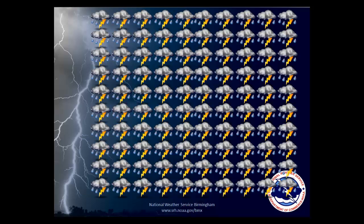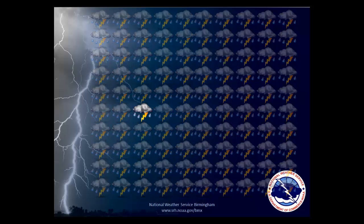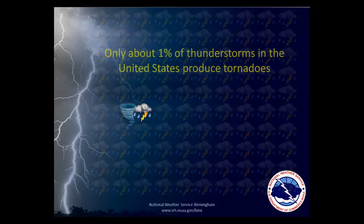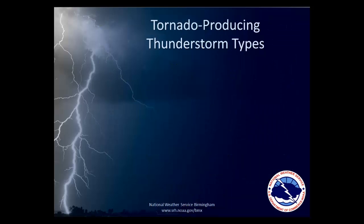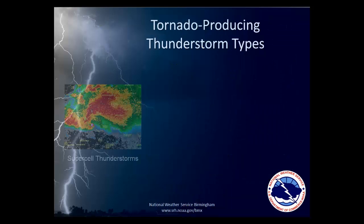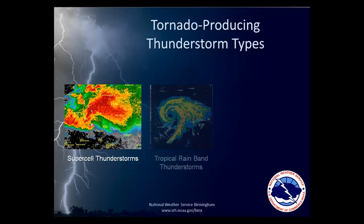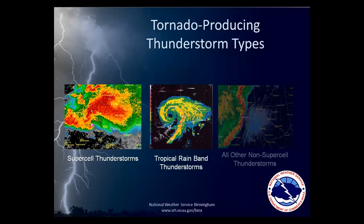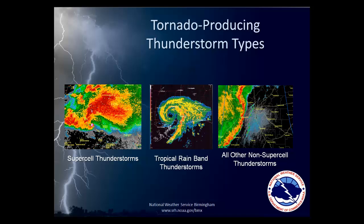Obviously, not all thunderstorms produce tornadoes. In fact, it's estimated that only about one out of every 100 thunderstorms in the United States produces a tornado. In central Alabama, there are three main categories of thunderstorms that produce tornadoes: supercell thunderstorms, tropical rain band thunderstorms, and all other non-supercell thunderstorms, often in the form of long lines or large bow-shaped line segments.